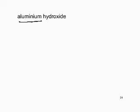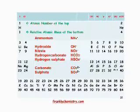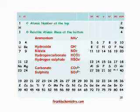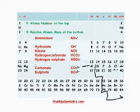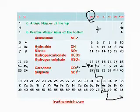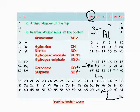Aluminium hydroxide: aluminium is a simple ion found in the periodic table, and hydroxide is a compound ion on the data sheet. Aluminium is in group 3 — it's a metal, so it's positive. Being in group 3, it has a 3+ charge: Al³⁺. The hydroxide ion has formula OH and a minus charge.